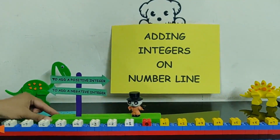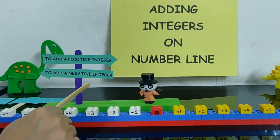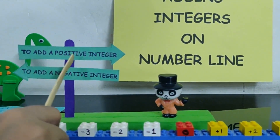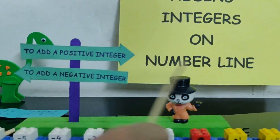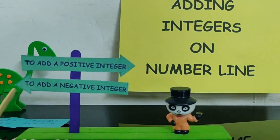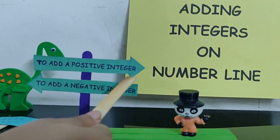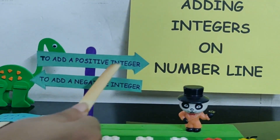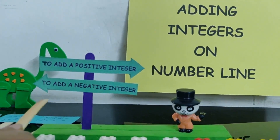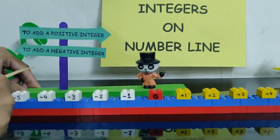Now the two rules that we have to follow — Mr. Panda is standing there with the rules. The first rule: to add a positive integer, we move towards the right on the number line. To add a negative integer, we move towards the left. The arrows are pointing here to show the direction. So this will help us to perform addition on the number line.